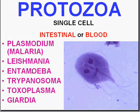Amoebiasis, or amoebic dysentery, is caused by an extremely common species of protozoan called entamoeba. The classical African sleeping sickness, transmitted by the bite of the tsetse fly, is called trypanosomiasis.